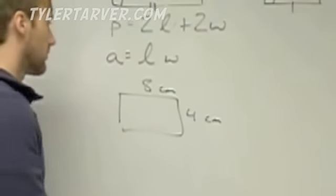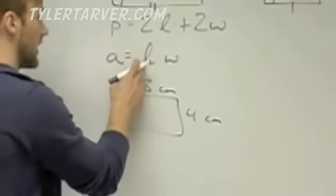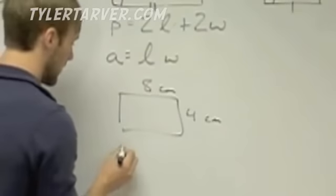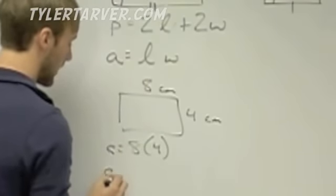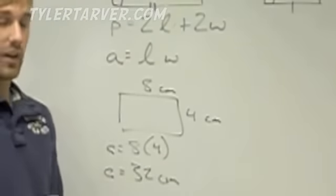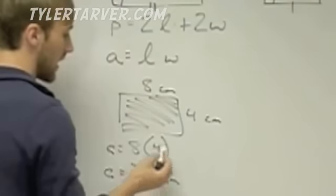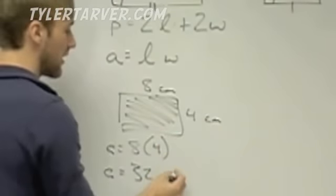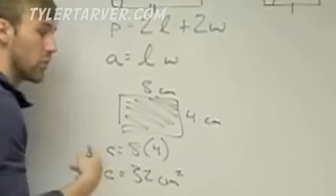Say we have a rectangle. We've got a length of eight, width of four. To find the area, all we do is we plug in our length and our width. So it would be eight times four, which would equal out to be 32 centimeters. That's our area. That is the measurement of everything in here. When we multiply those centimeters times each other, it is centimeters squared. So our final answer is 32 centimeters squared.